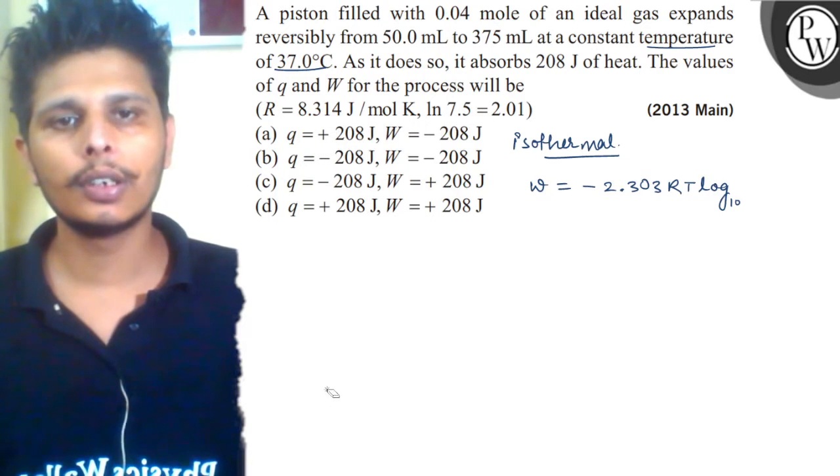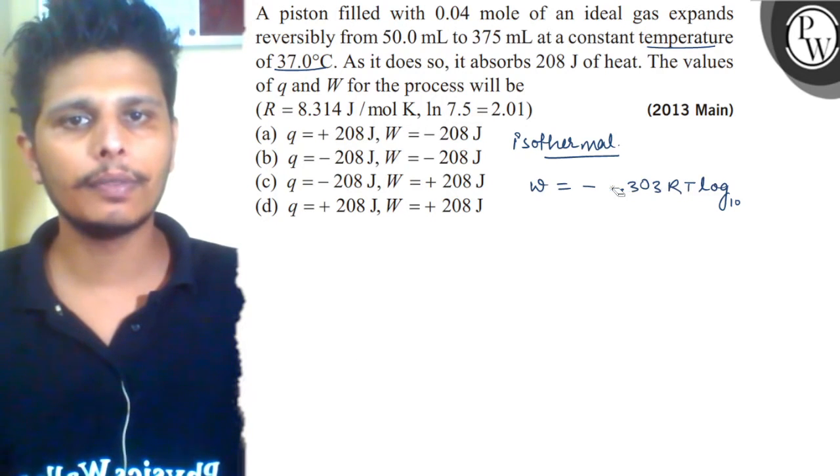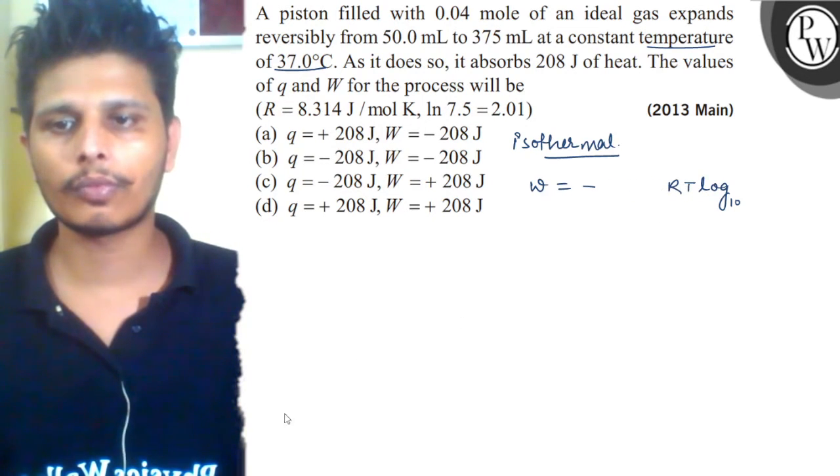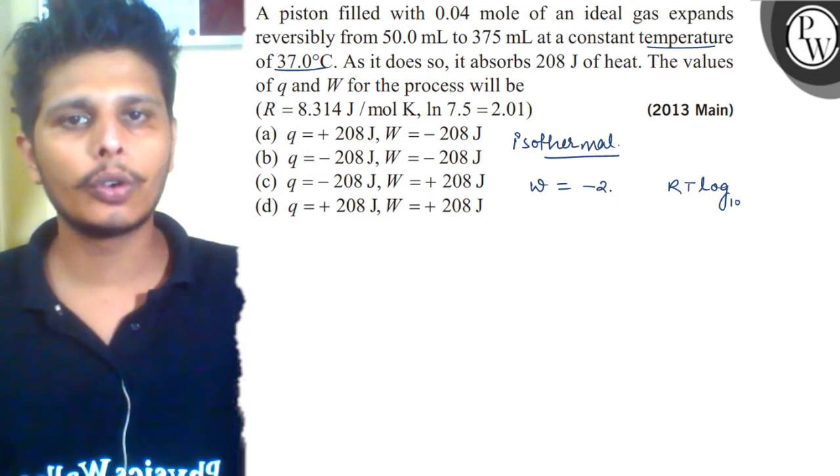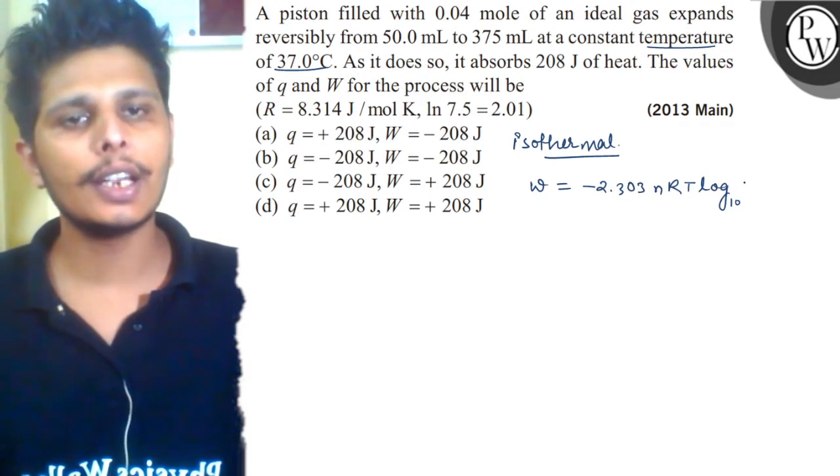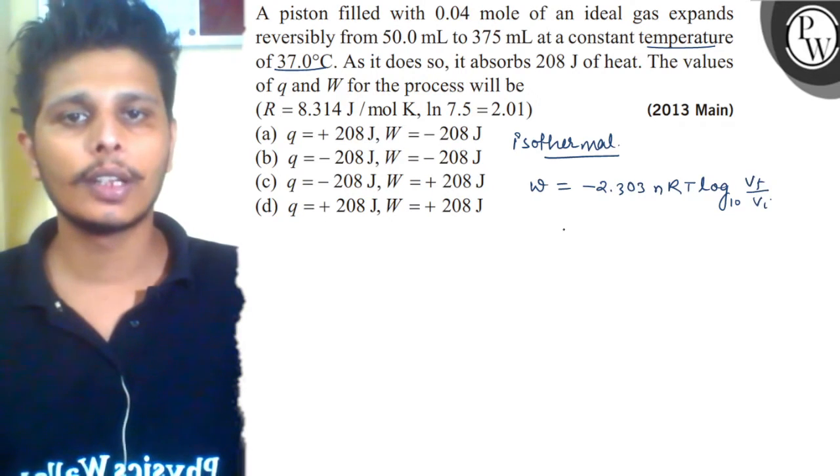Here we will multiply 2.303 nRT log with base n, V final upon V initial. Okay? What will we get?